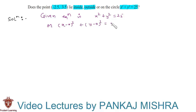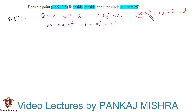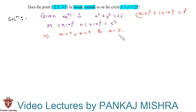equals to 5². On comparing this equation with the standard form (x - h)² + (y - k)² = r², where h and k are coordinates of the center and r is the radius of the circle, here we have h = 0, k = 0, and r = 5. This means the center of the circle is at the origin and its radius is 5 units.